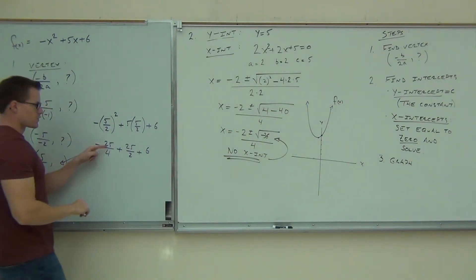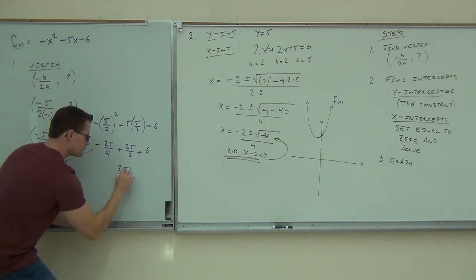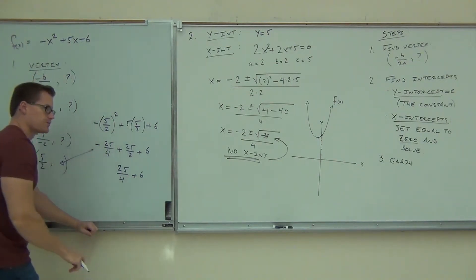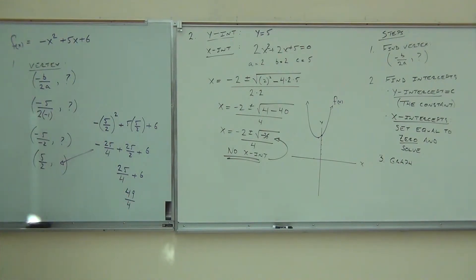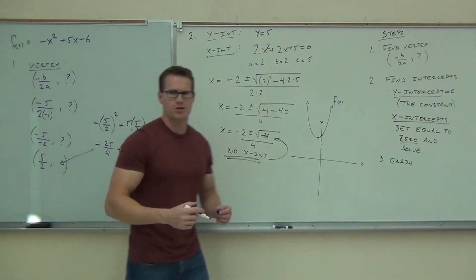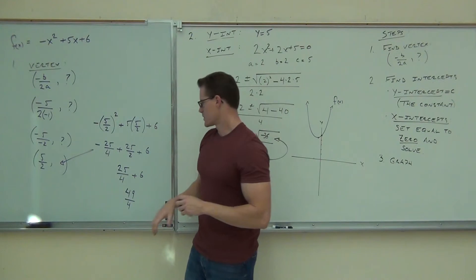So negative 25 fourths plus 25 halves. This is the same thing as 50 fourths. So we're going to get 25 fourths out of this. Plus six, that's going to be 25 fourths plus 24 fourths. That's going to be 49 fourths. That's nasty. Someone double check the work though. I did that pretty quick. Yes, no? Okay.